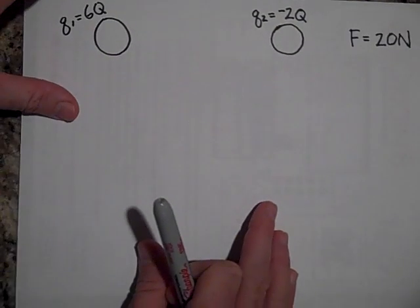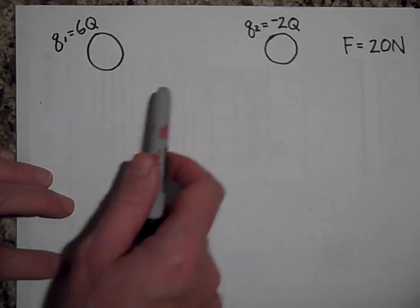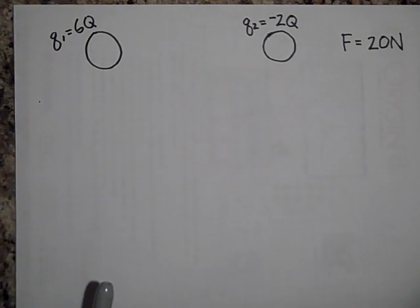Okay, let's start off with, we have these two charges. Q1 is 6 Coulombs. Q2 is negative 2 Coulombs. Not Coulombs, Qs, just Qs.